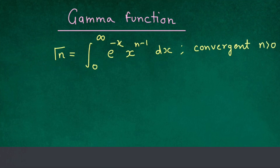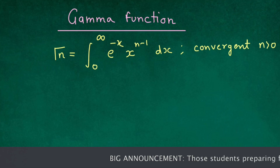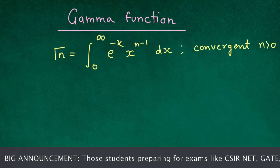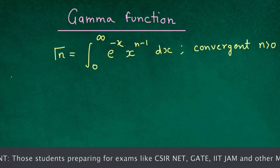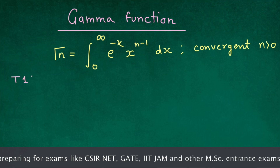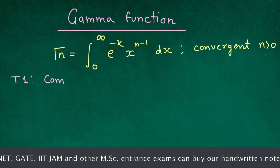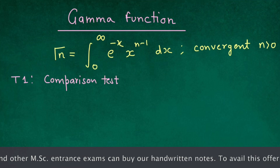Now let us see the proof for this convergence condition. But before we get into the proof, let us see some tests. The first test is, I am writing this test as T1. This test is the comparison test limit form.